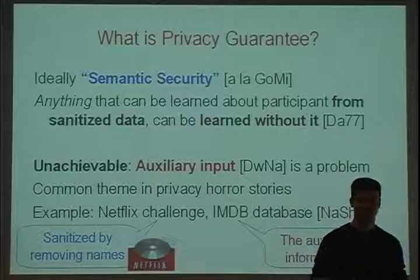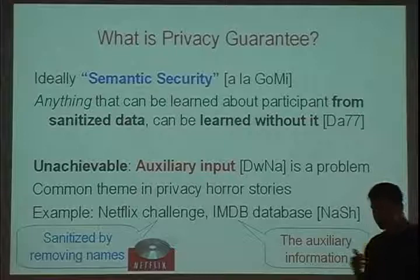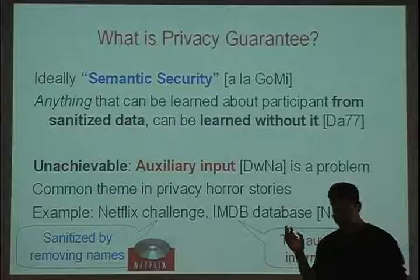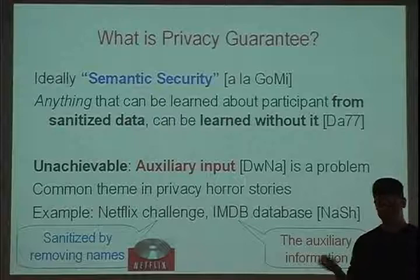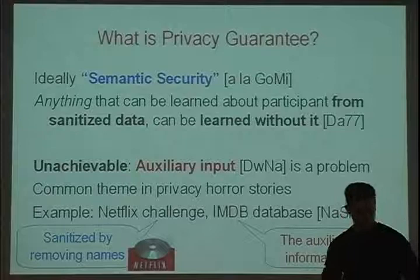Of course, Netflix doesn't want to publish the real data set of what movies users are renting — users wouldn't be happy with that. So what they do is sanitize or anonymize their database, simply by removing usernames. Instead of saying 'Guy Rothblum rented this movie,' it would say 'user number 9762 rented this movie.' Hopefully no one knows which user number you are, so privacy is preserved — that was the hope when they published the sanitized database.